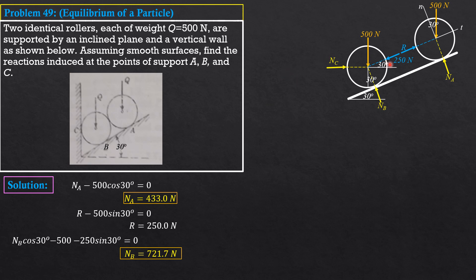Then, finally, summation forces horizontal equals 0. N sub Z minus NB, which is 721.7 sine of 30, the X component. Then, minus 250 cosine of 30, 250 cosine of 30 degrees equals 0. So, N sub Z equals 577.4 newtons.